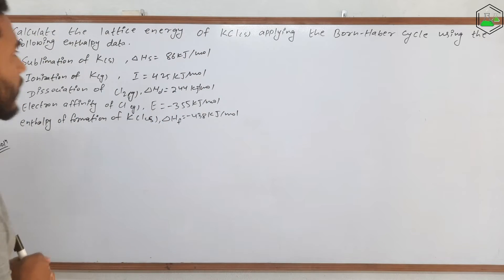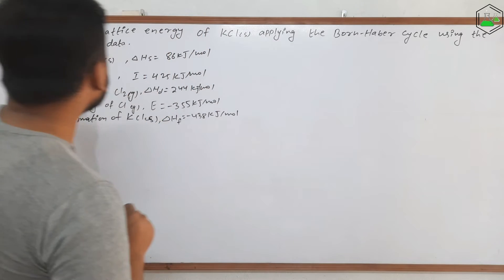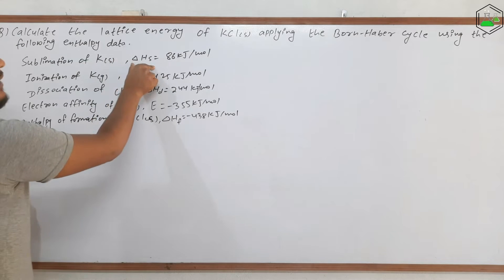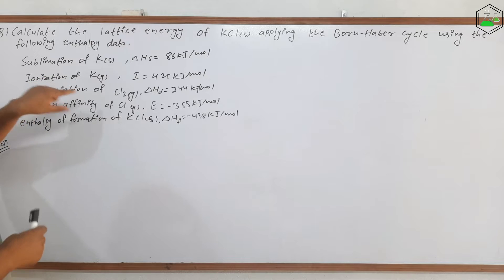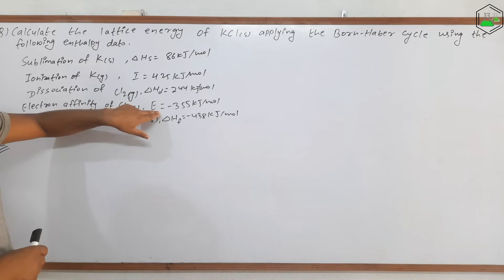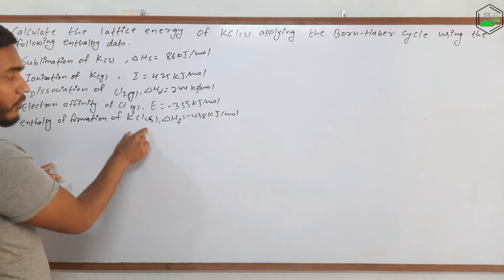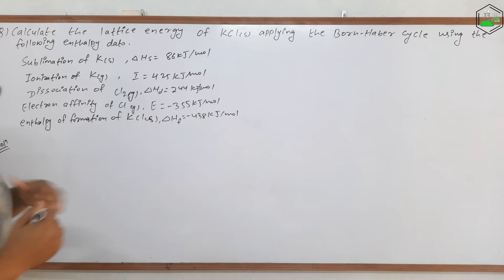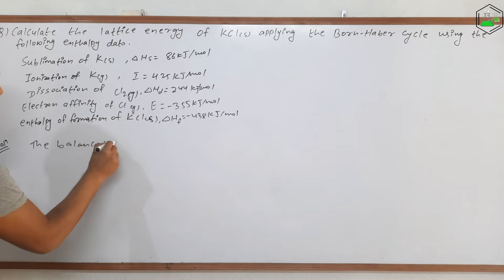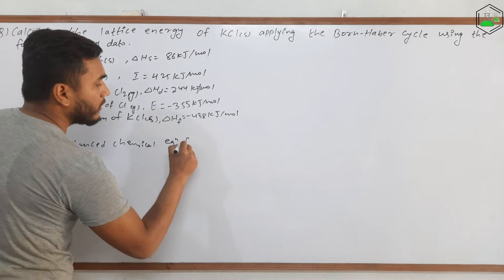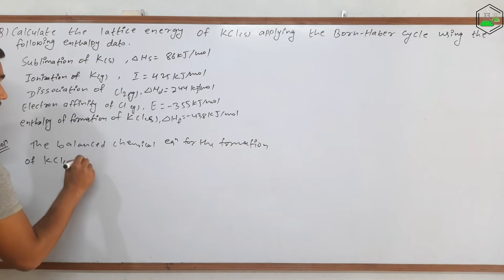I have already written the first numerical problem. The question is: calculate the lattice energy of KCl, which is an MX type compound, applying the Born-Haber cycle using the following enthalpy data. The sublimation energy (ΔHs) for potassium solid, the ionization energy for potassium gas, the dissociation energy for chlorine gas (diatomic form), the electron affinity for chlorine gas (monoatomic form), and the enthalpy of formation of potassium chloride are all given. Before starting, we must write the chemical reaction for the formation of potassium chloride.